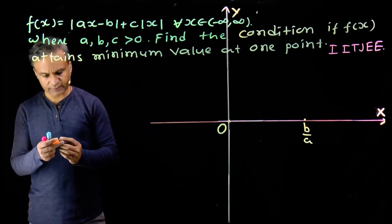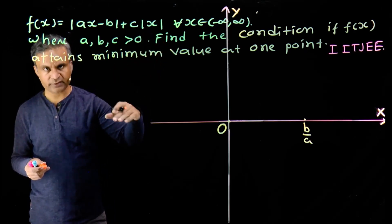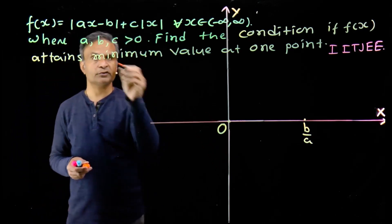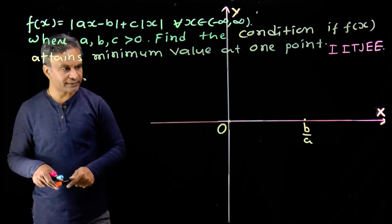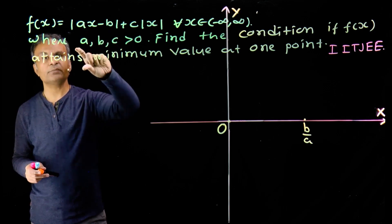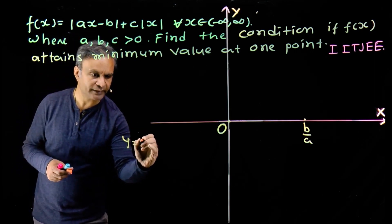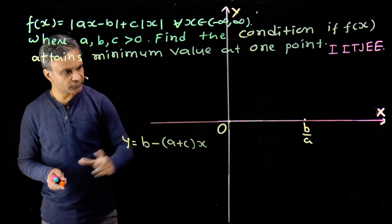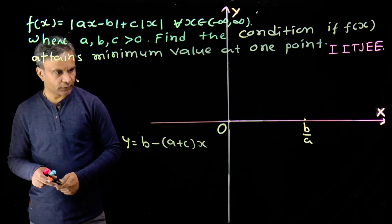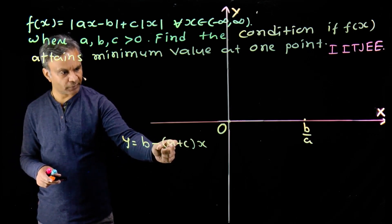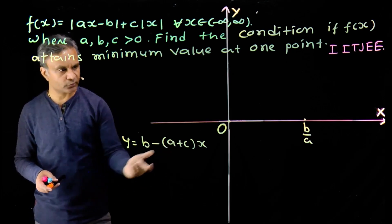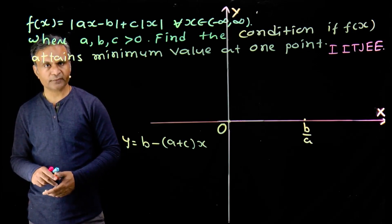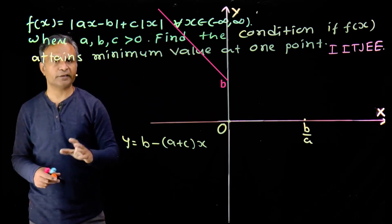For x less than zero, modulus of x will be minus x and the other term becomes b minus ax. So the function becomes y = (b minus ax) plus c into (minus x), giving y = b minus (a plus c)x. This is a linear function — a straight line with negative slope (minus (a plus c)) and y-intercept b, since a and c are positive real numbers.